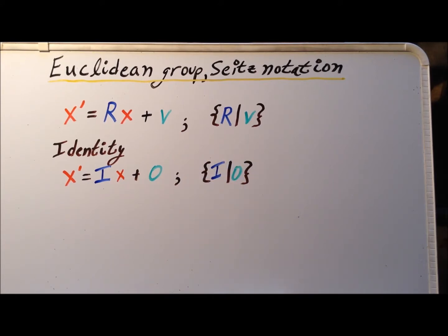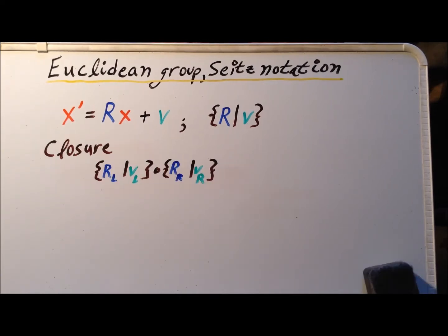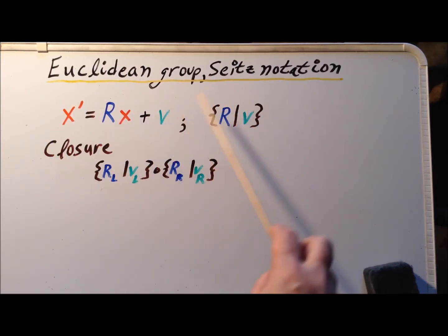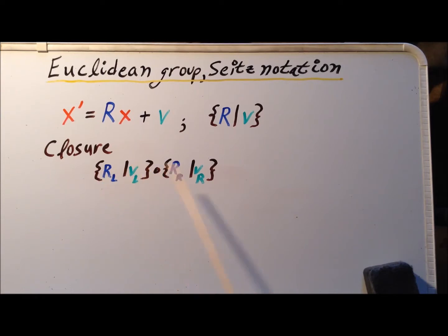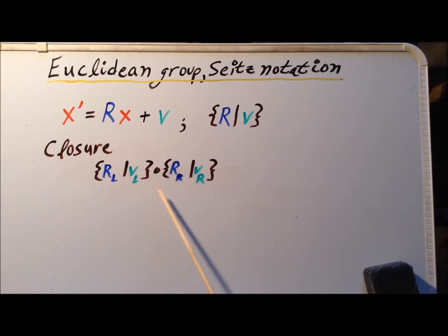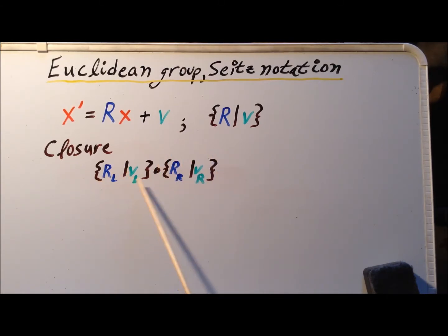Now we need to fulfill the other group postulates to demonstrate that the Euclidean group has the group property. In our proposed group, the group elements are the individual transformations abbreviated with the Zeitz notation, and the group operation is composition. So let's show that if we compose two Euclidean transformations, the result is also a Euclidean transformation. We will have the first transformation be R sub R, V sub R — the right-most operator — and then R sub L, V sub L for the left operator, which will allow us to see clearly where each operator comes into the composition.